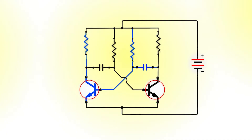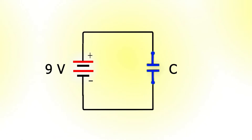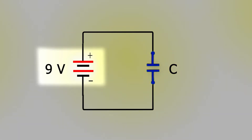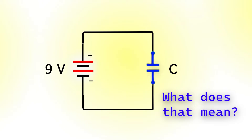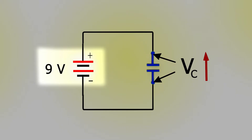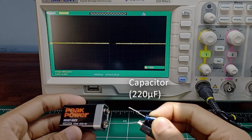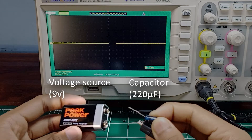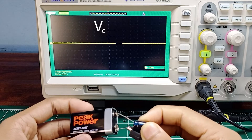Let's understand the purpose of the capacitor. If I connect it across a voltage source such as a 9V battery, the capacitor charges. It means that voltage across it increases until it reaches the source voltage, which is 9V in my case. Here is a demonstration — as I connect the capacitor across the voltage source, the voltage across the capacitor, V subscript C, rises from 0V to 9V.